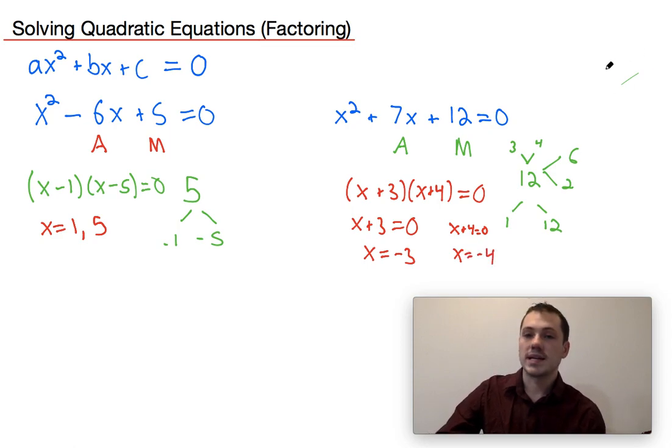And this is true because if x plus three equals zero, zero times anything is going to be zero. Or if x plus four equals zero, zero times anything is going to equal zero. So we have x equals negative three or negative four.